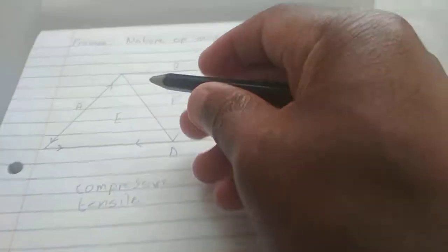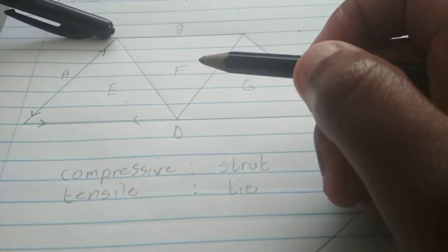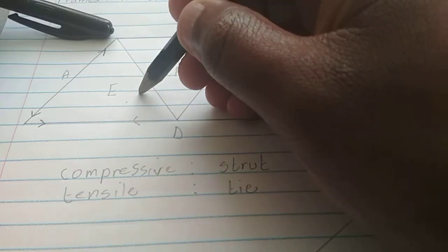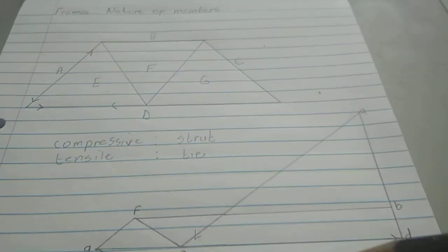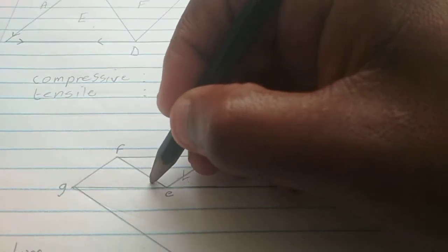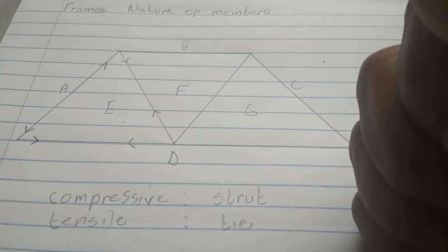The next one is EF. We go to its far left and move in a clockwise direction — we hit FE. We go to our force diagram; there's F and there's E, so it's moving that way. We take that direction, put it right there where we were standing, and then balance it. It's trying to push itself together, meaning it's experiencing a tensile force, thus making it a tie.